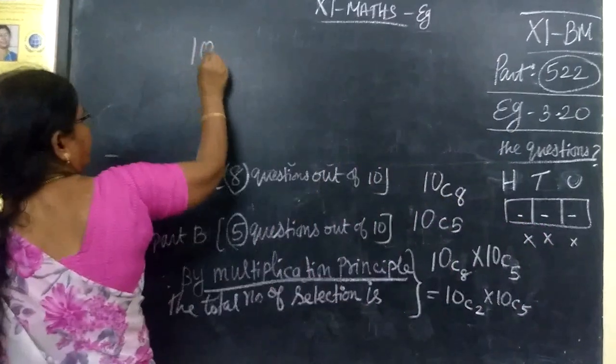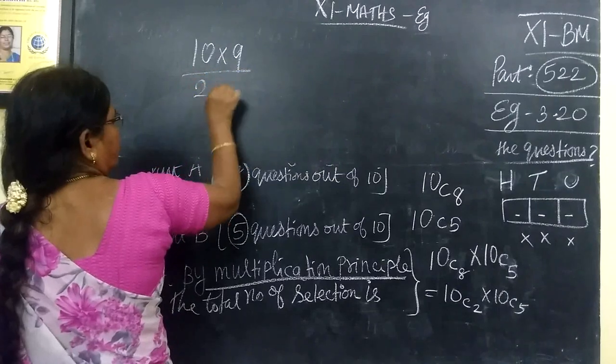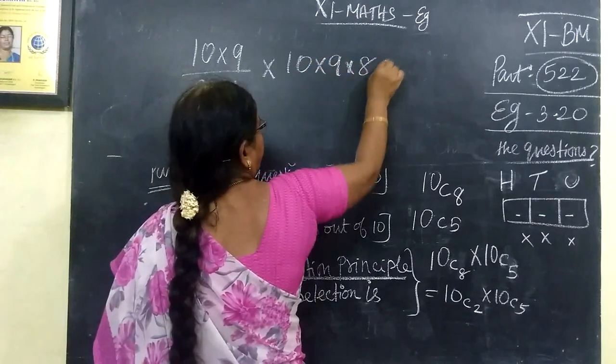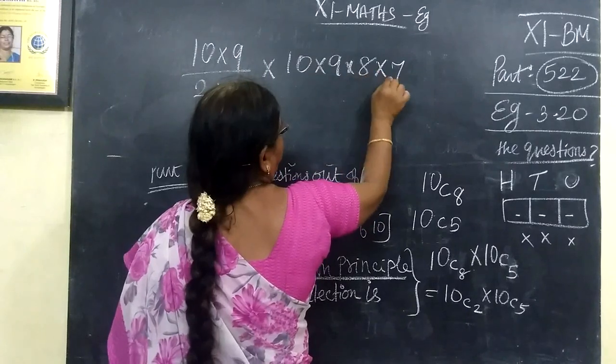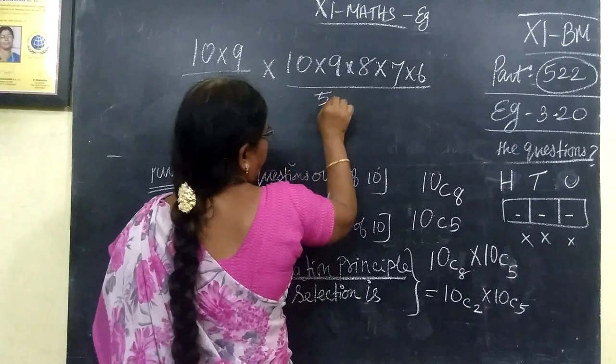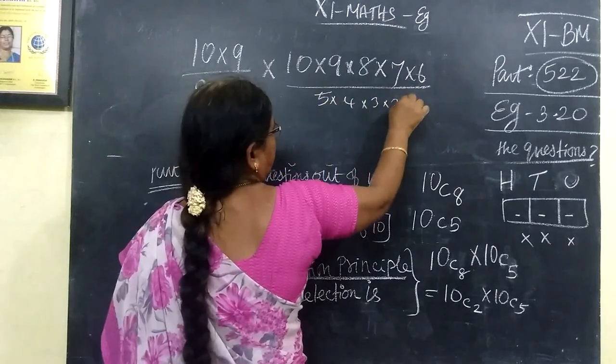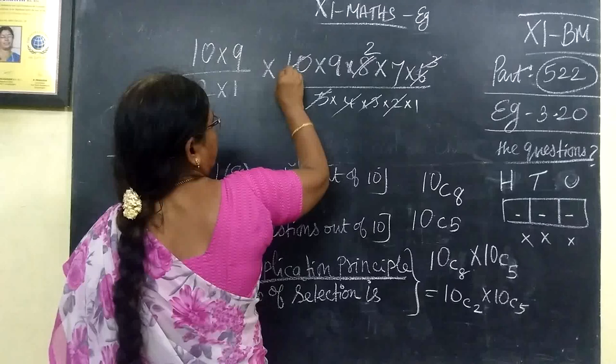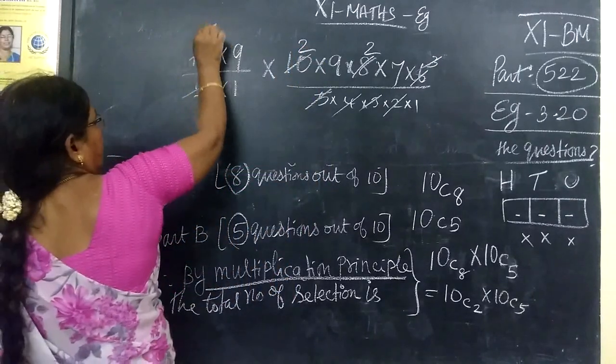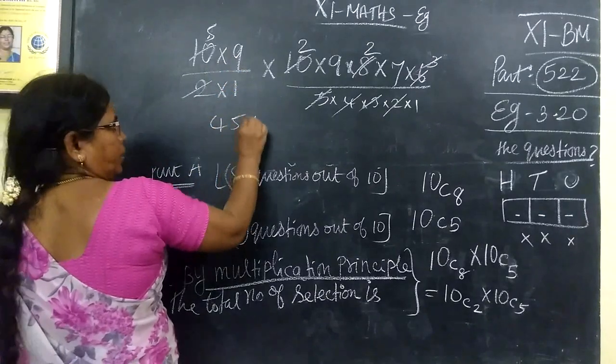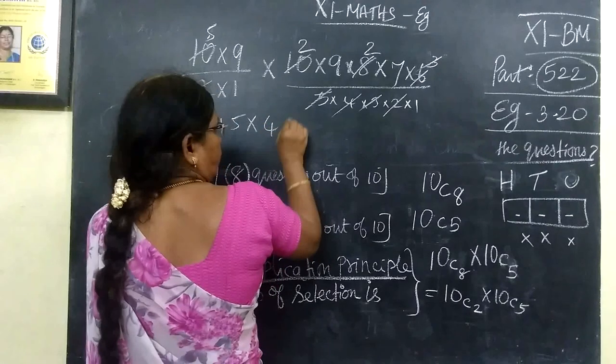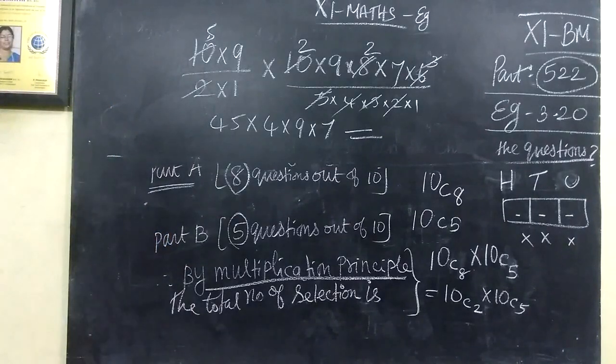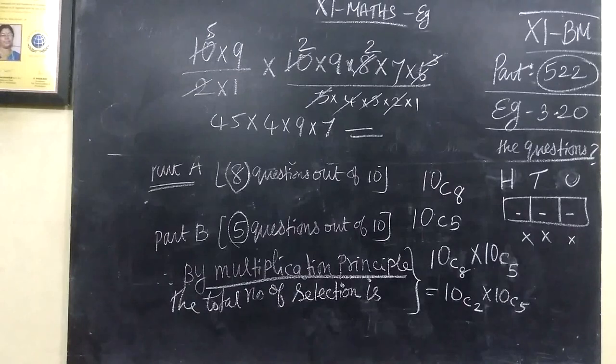Writing it out: 10 times 9 divided by 2 times 1, times 10C5, which is 10 times 9 times 8 times 7 divided by 5 times 4 times 3 times 2 times 1. Cancel, cancel, then 2 times 2 cancel, giving 45. Then 2 to 4, then 9 times 7 multiply.